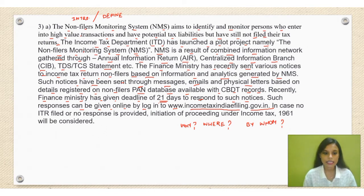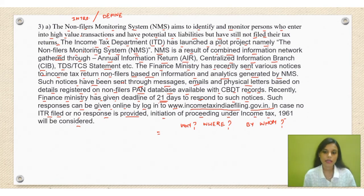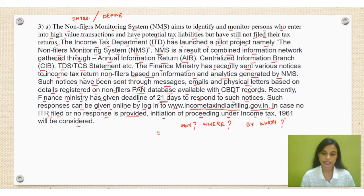In case no ITR is filed or no response is provided, initiation of proceedings under the Income Tax Act 1961 will be considered. All these things you should be writing in this answer. You need to explain in a detailed manner so that it reaches 200 words, including these highlighted points. That's it for today's class — we will meet again in our next classes. Post your queries in the comment box if you have any.